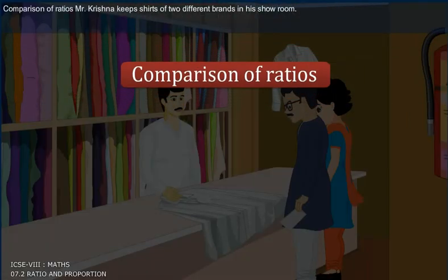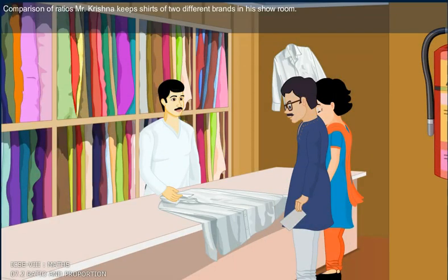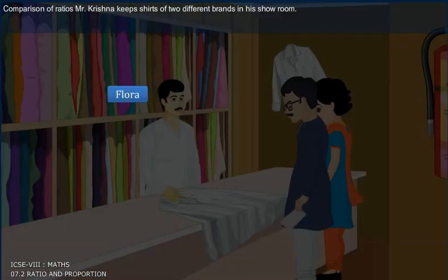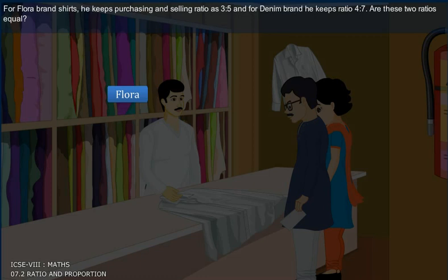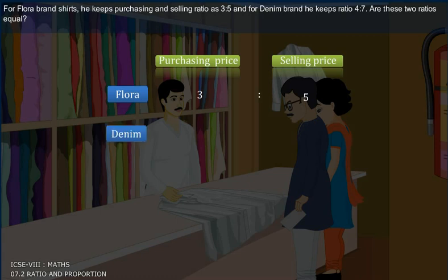Comparison of ratios. Mr. Krishna keeps shirts of two different brands in his showroom. For Flora brand shirts, he keeps purchasing and selling ratio as 3 is to 5. And for denim brand, he keeps ratio 4 is to 7. Are these two ratios equal?